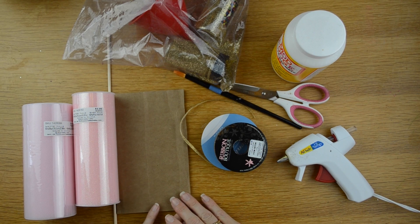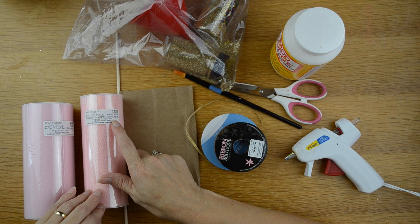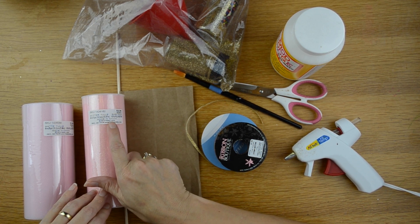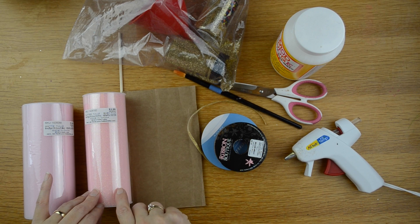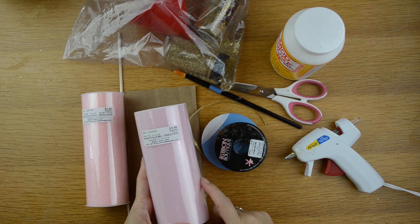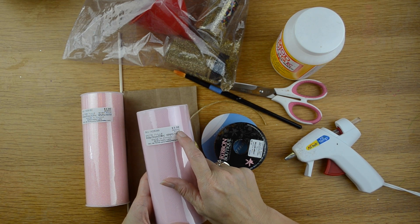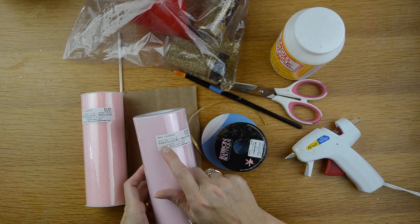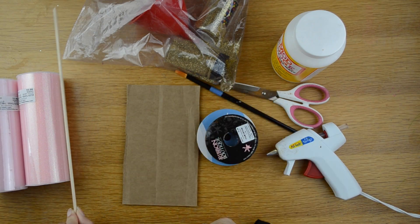To make these tulle pom-pom wands, you're going to need a few supplies. Of course, you're going to need tulle. I am using the color baby pink, it's a glitter tulle and the size of this roll is 6 inch by 12 yard and it was $3.99 at my local craft store which is Hobby Lobby. There is also a regular color pink if you don't like the little glitter in it. This one is just pink, it's also $3.99 and this one is a 6 inch by 25 yard.